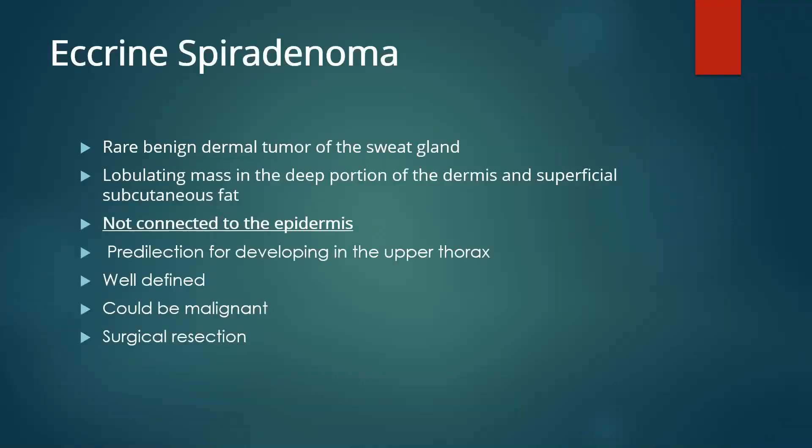We'll talk briefly about eccrine spiradenoma. It is a rare benign dermal tumor of the sweat gland. It shows a lobulating mass in the deep portion of the dermis and superficial subcutaneous fat. It is not connected to the epidermis. It has a predilection for developing in the upper thorax. It is usually well defined; however, it carries a malignant potential. Management is usually by surgical resection.